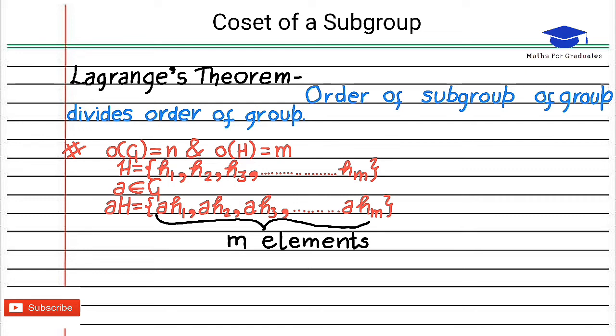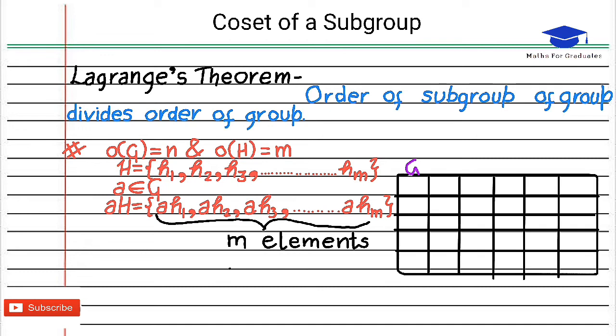Now let there be total p distinct cosets of H. And we know that all the distinct cosets are disjoint. That means G can be divided into equal number of subsets of the same size.